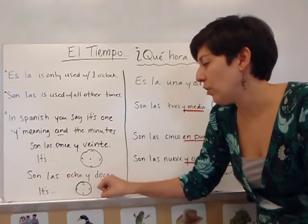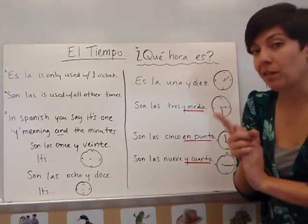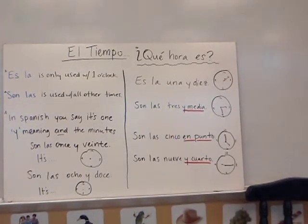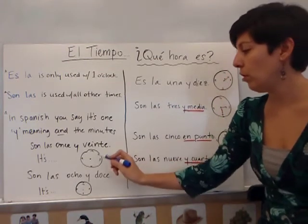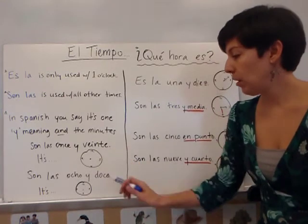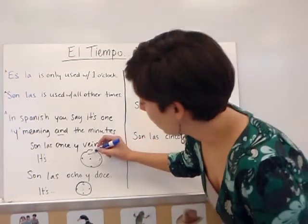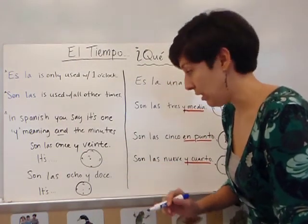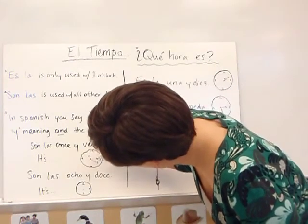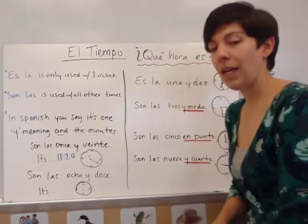And the next one says son las ocho y doce. It's whatever ocho y doce would be. Go ahead and do that, and I'll grab my marker so I can show you. Hopefully you've got your clocks drawn by now. If not, hit pause. You draw a circle, put a dot in the middle, and then put twelve, three, six, nine. With once — once means eleven — I'm going to draw the little hand to the eleven. Son las once y veinte: twenty is by the four. Your clock should show it's 11:20.